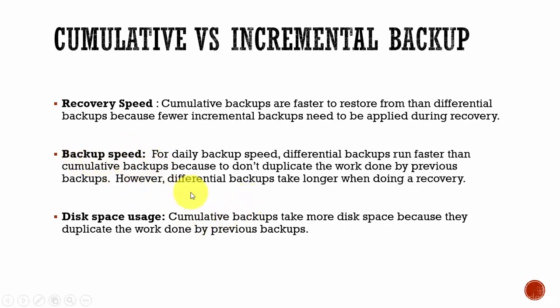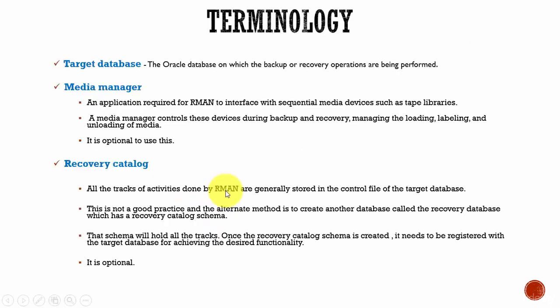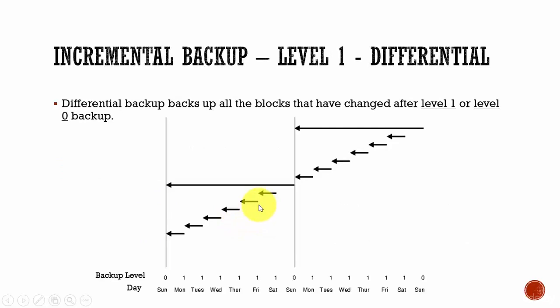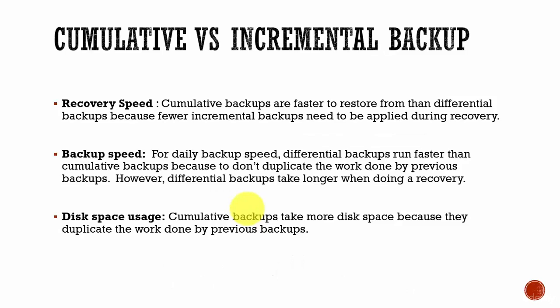The next dimension is backup speed. Differential backups run faster than cumulative backups because cumulative backups have to go back and backup all the changes that happened since level 0, whereas differential backup only goes back to the last level 1 backup. For disk space usage, cumulative backups take more disk space than differential backups since they go all the way back to level 0 and include more changed data blocks. Please revisit this video so that you can understand these concepts better and use them in the Recovery Manager.